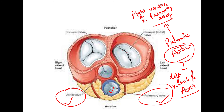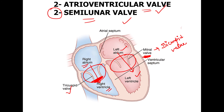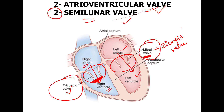To summarize the valves: we have the atrioventricular valves — the tricuspid valve on the right side, and the mitral valve (also called the bicuspid valve) which is present between the left atrium and left ventricle.